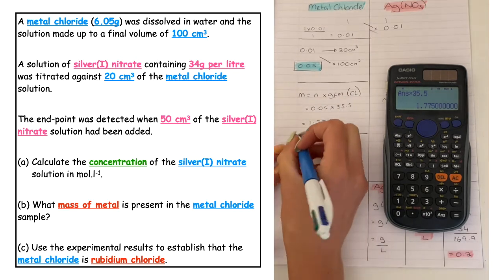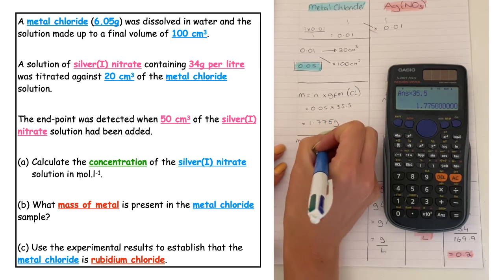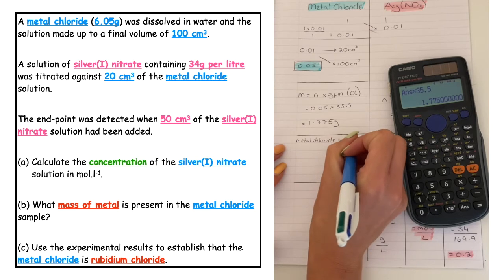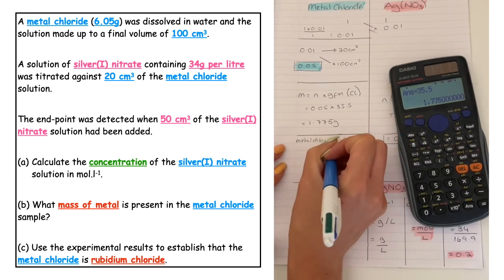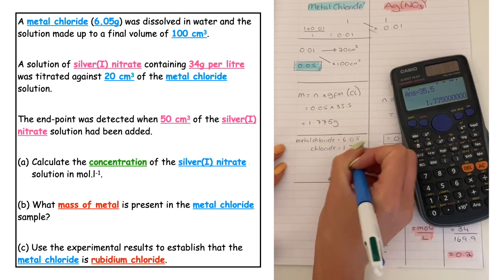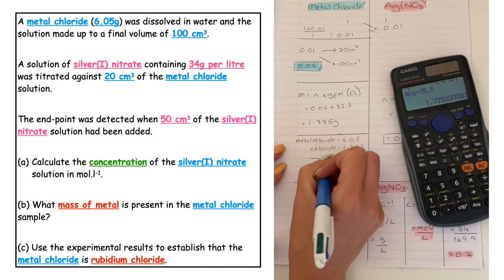The total mass, if we've got metal chloride, the original sample was 6.05 grams. The chloride we have just calculated as 1.775 grams. So to calculate the metal we would take these two values away from each other.